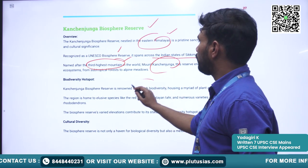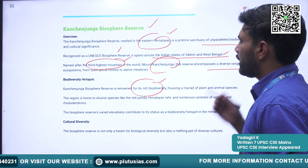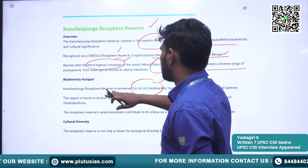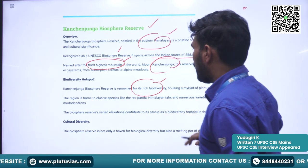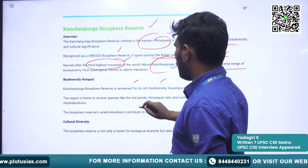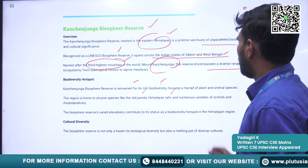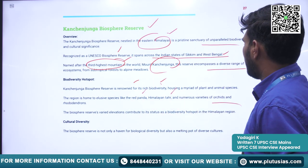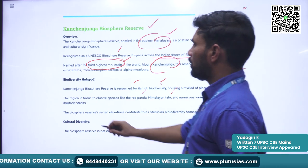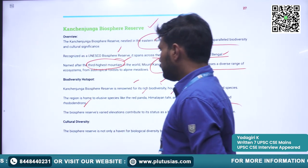It is renowned for its rich biodiversity. Some of the species present here are the Red Panda, Himalayan Tahr, and numerous varieties of orchids and rhododendrons.